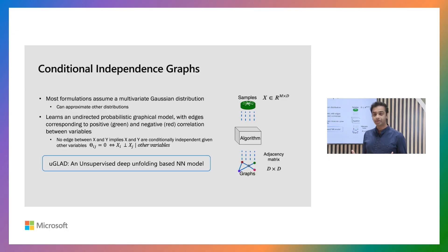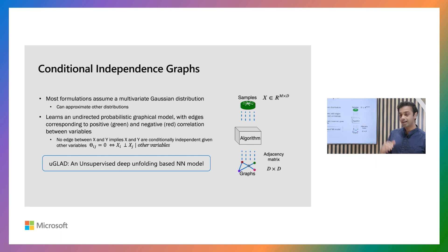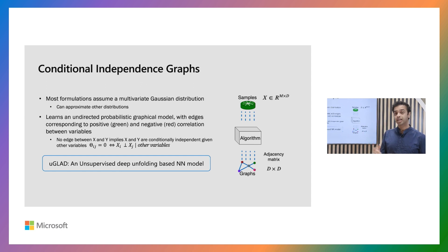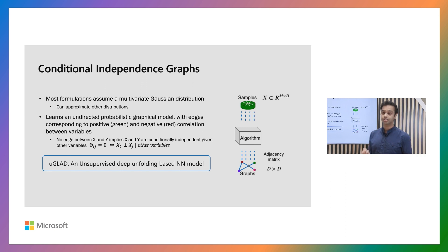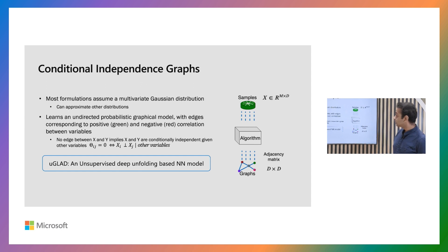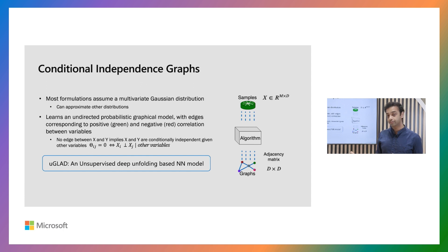What are conditional independence graphs? Our task is: given data which has m samples and d features, we want to recover an adjacency matrix which shows the connection between the d features in the form of a graph. This is a special graph because it has two types of edges — it can have positive correlation or negative correlation. Basically, what conditional independence tells you is that, given all the other features, whether those two features are dependent on each other or not.